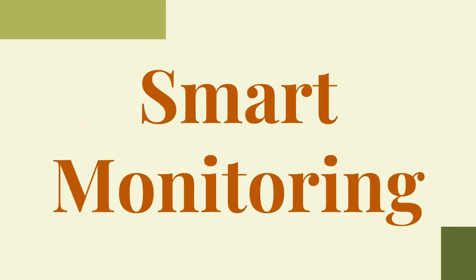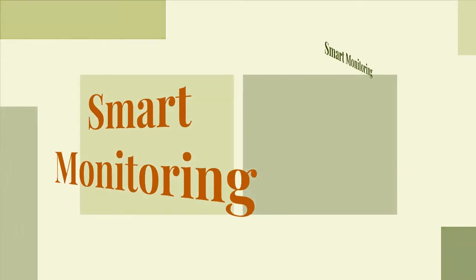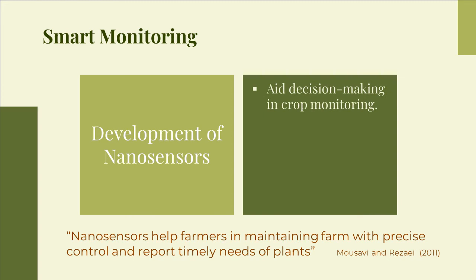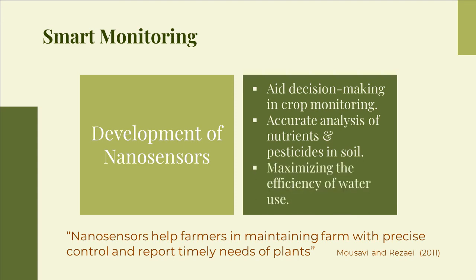Lastly, we delve into the application of agro-nanotechnology for smart monitoring. As described by Musavi and Rezi in 2011, nanosensors help farmers in maintaining farms with precise control and report timely needs of plants. Thus, it will be mandatory to address research efforts to the development of nanosensors to aid decision-making in crop monitoring, accurate analysis of nutrients and pesticides in soil, or for maximizing the efficiency of water use for a smart agriculture.